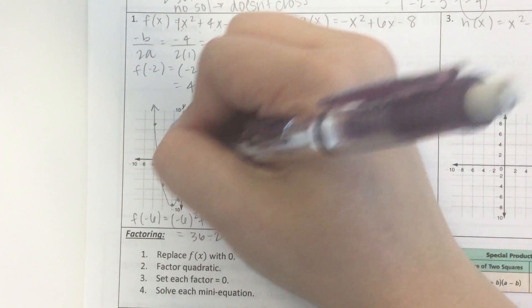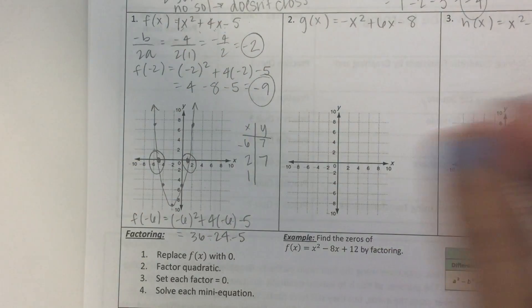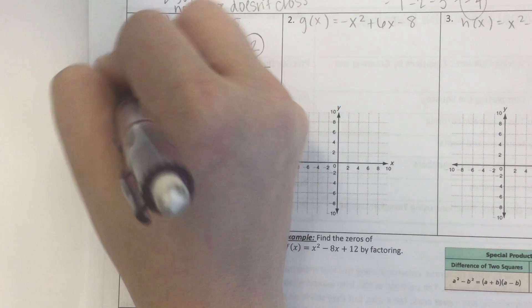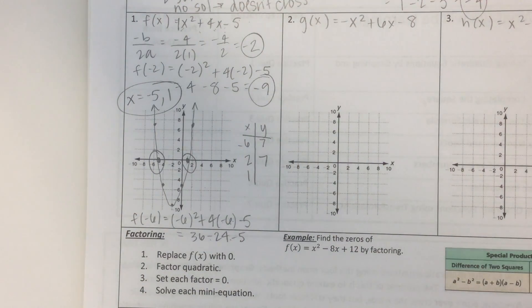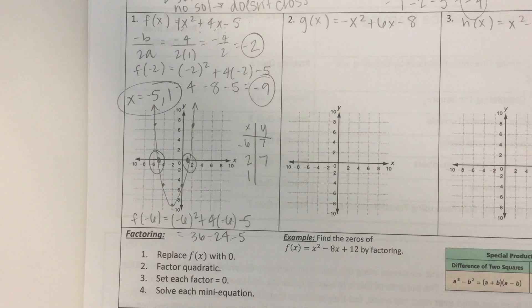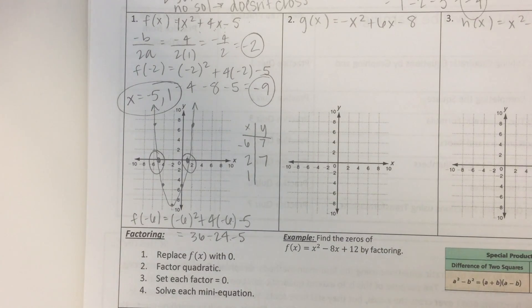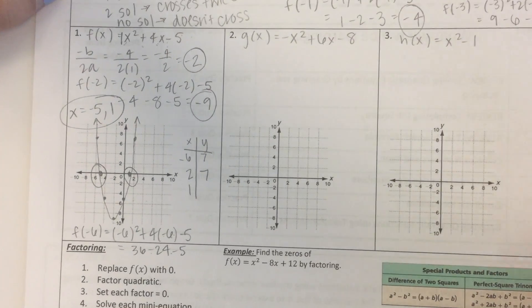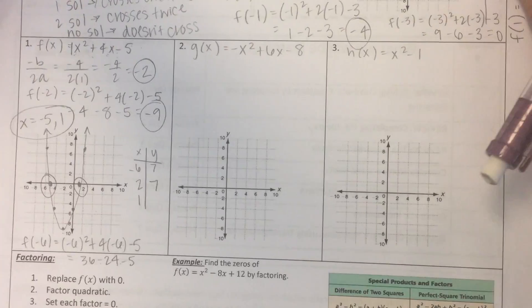So our two solutions, we have to write them down. x equals negative 5 and 1. Let's circle it so we can see easily where it is. Alright. So that is the first example.